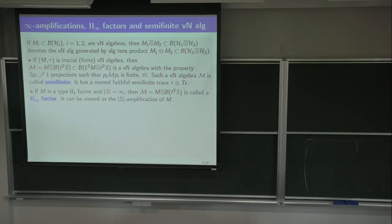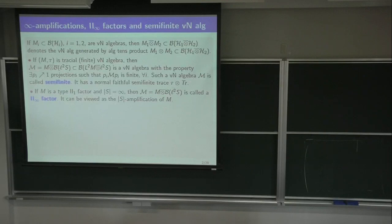You still get a von Neumann algebra with a faithful, normal trace. Such von Neumann algebras — which have this exhaustion of the identity by finite projections — are called semi-finite. They are characterized by this property.